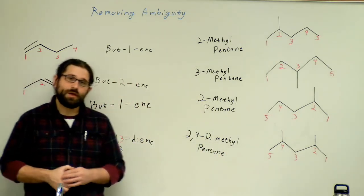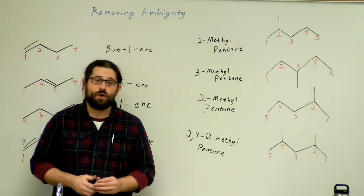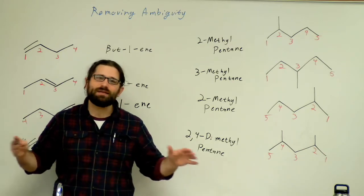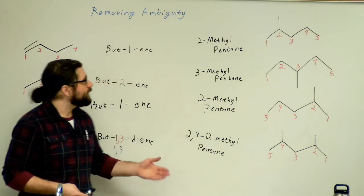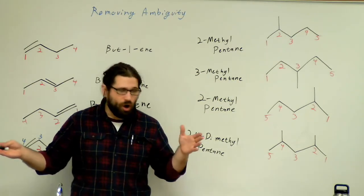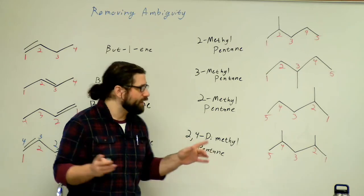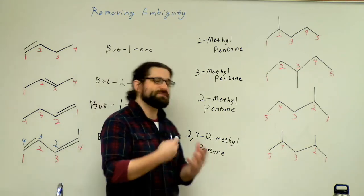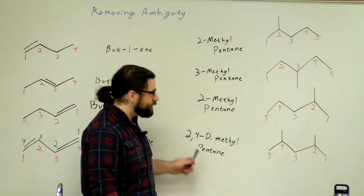So now that we have these numbers, we're going to be able to build pretty much any molecule using double, triple, or single bonds, using any number of alkyl substituents. We're going to be able to build all kinds of molecules of varying complexities and specificities using these numbering systems.